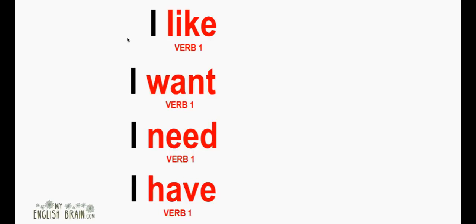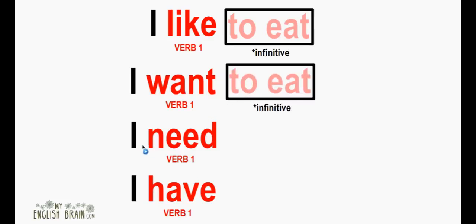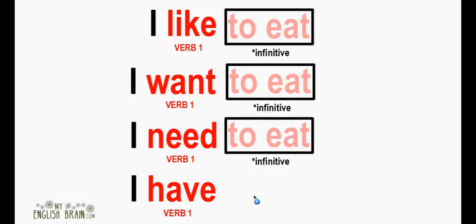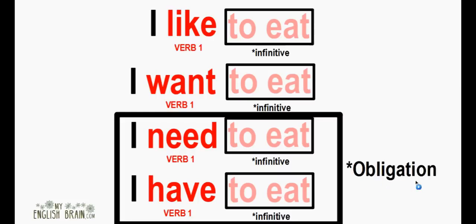We often use the infinitive with verbs like these: I like to eat, I want to eat, I need to eat, and I have to eat. Verbs like 'want,' 'need,' and 'have' are always followed with the infinitive. Now, 'I need to eat' and 'I have to eat' are obligations — they're very strong needs. These verbs with the infinitive are very common, and they're common in our grammar today.